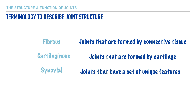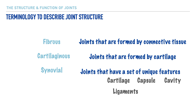There are six characteristics of synovial joints that we need to note. All synovial joints include cartilage, a capsule, a cavity, ligaments, synovial fluid, and bursa. With these characteristics on the board, let's identify where we'll find these and their purpose within the joint.